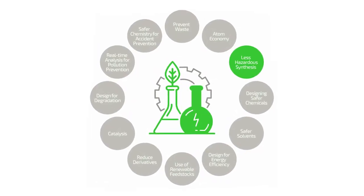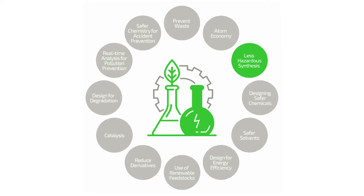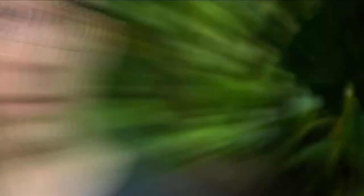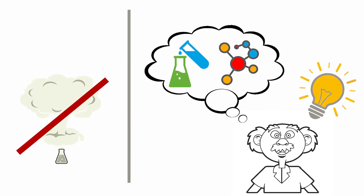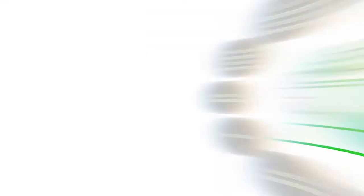Principle number three is called less hazardous synthesis. This means avoiding compounds which are toxic to humans or the environment. Sometimes, however, those compounds have to be used because they are very reactive and enable special chemical reactions. Therefore, chemists have to carefully think when using those compounds, as they produce a lot of harmful waste.